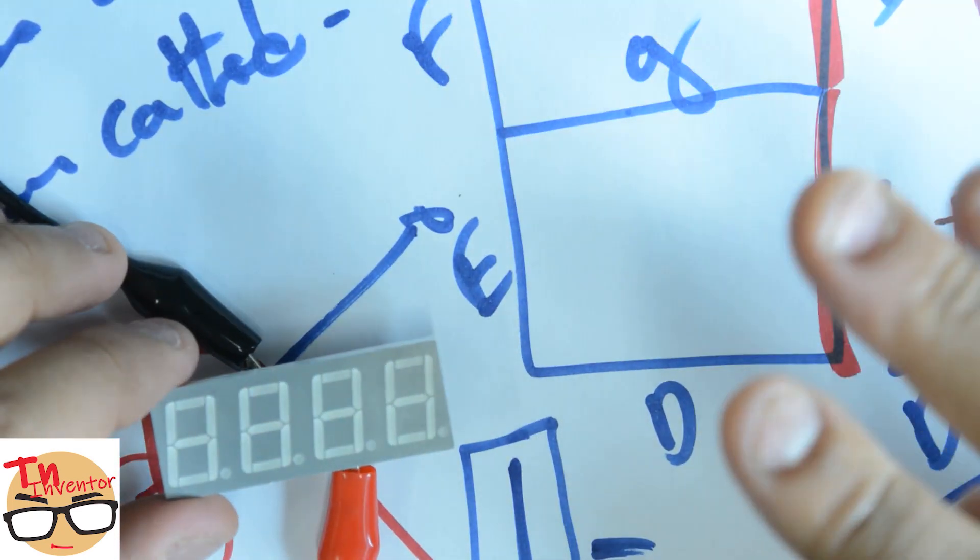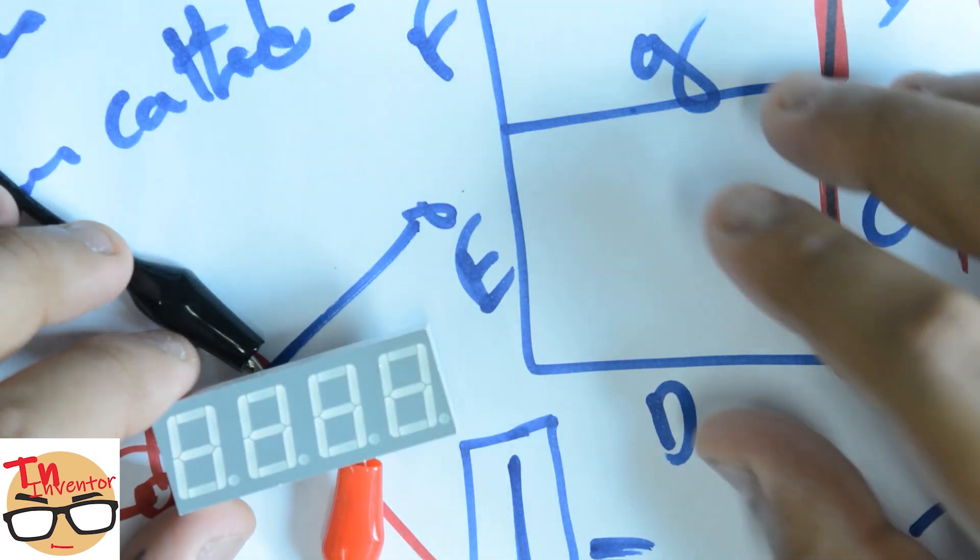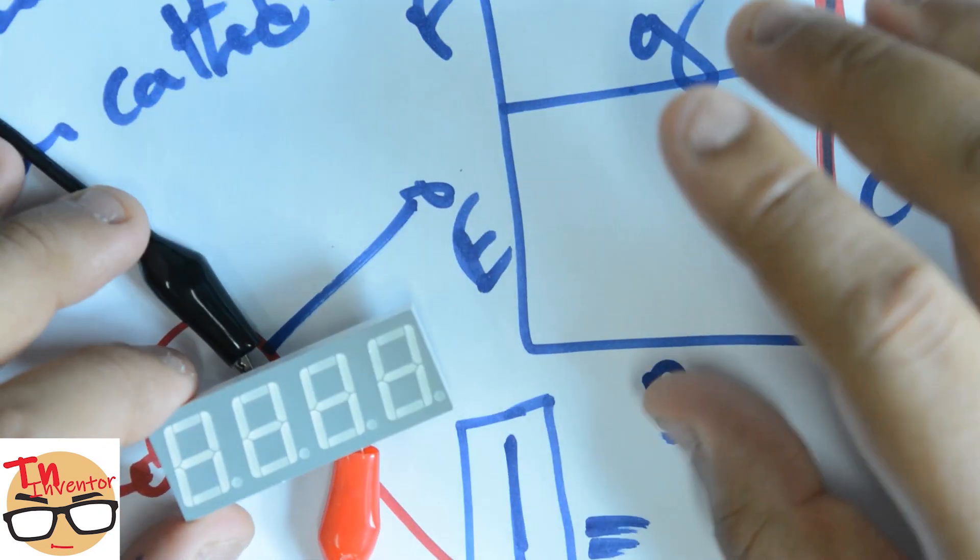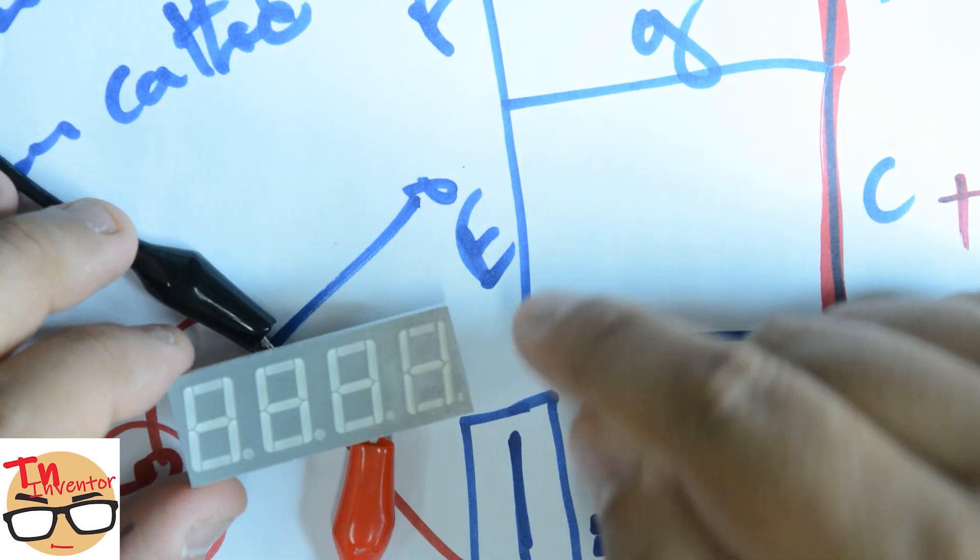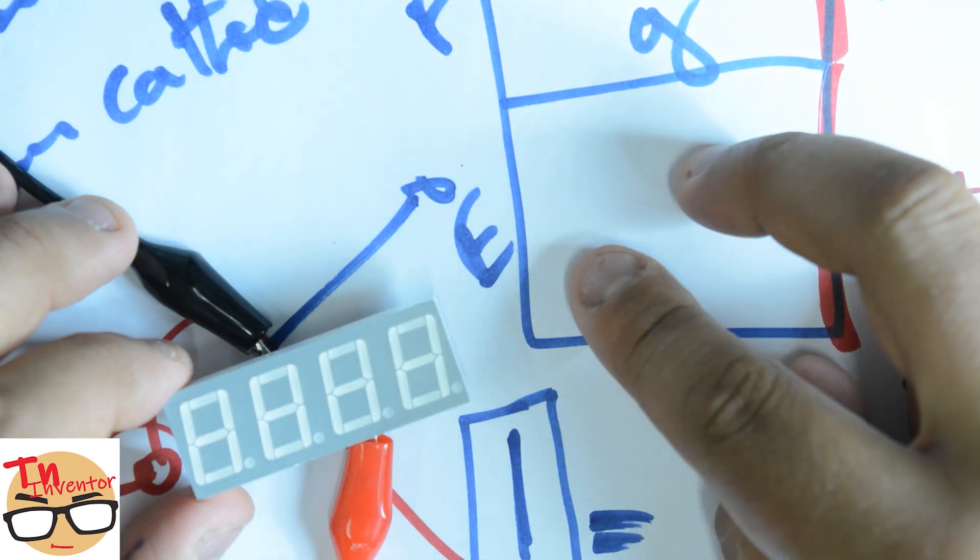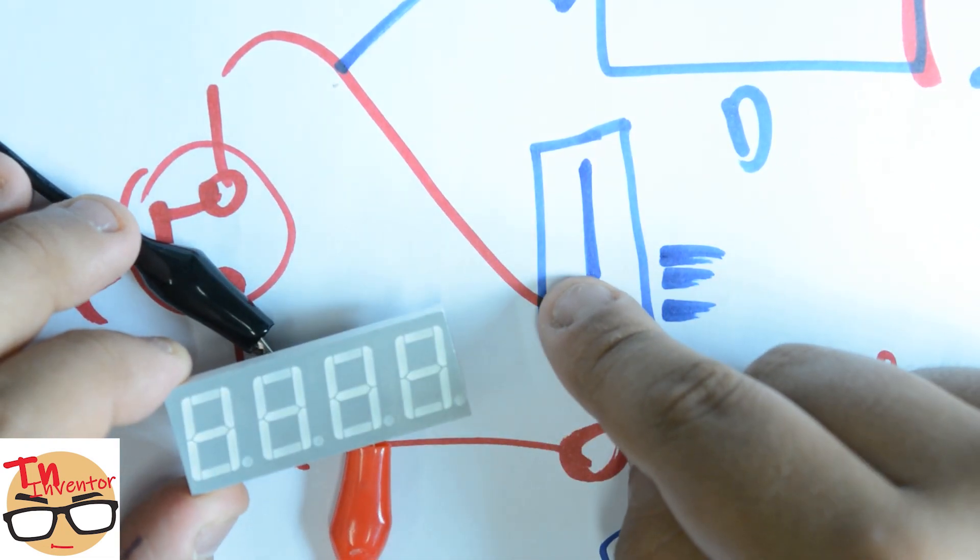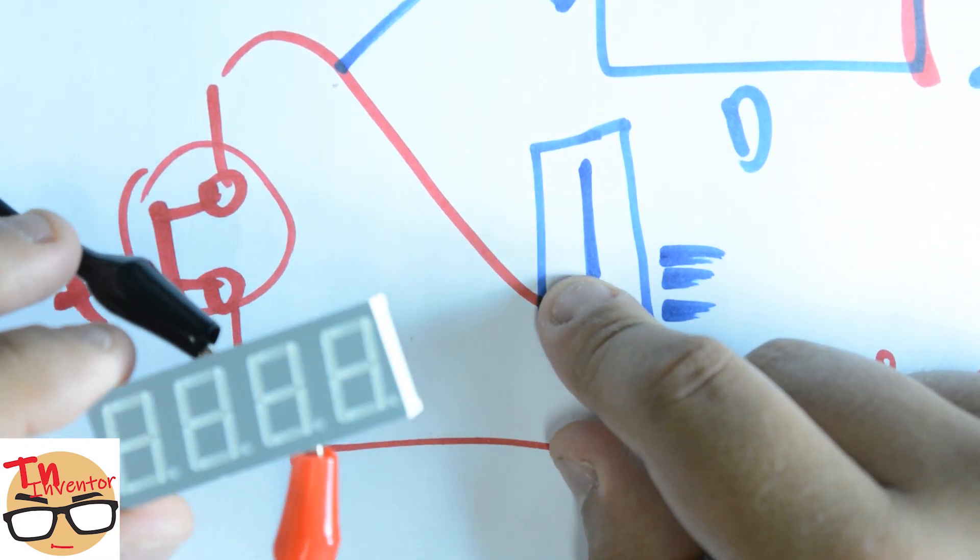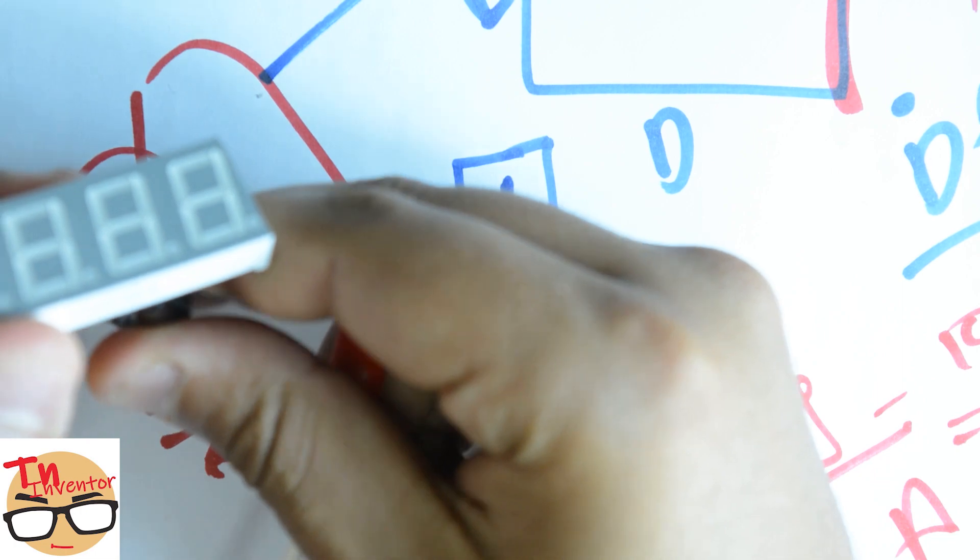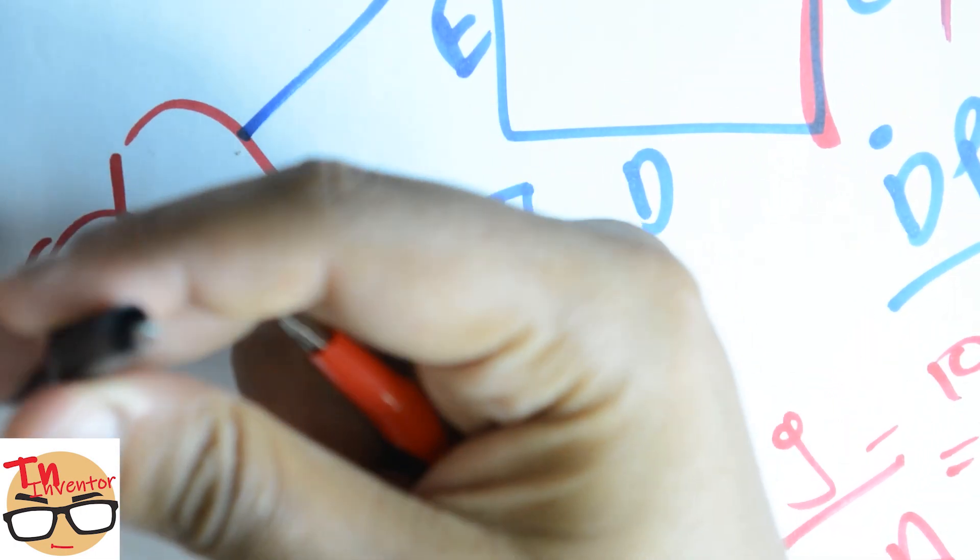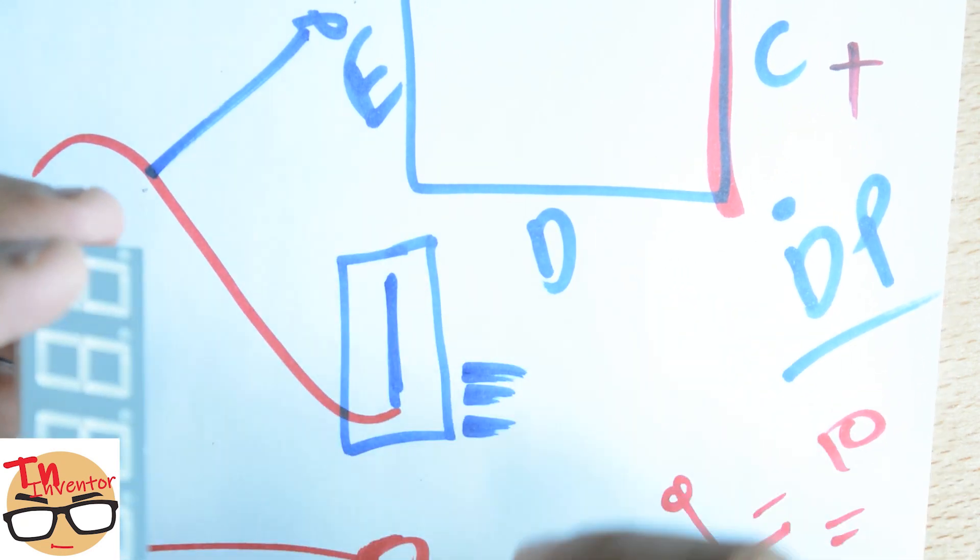The last one didn't light up, which means I have two possible options: either it's burnt, which isn't the case because this is brand new and the first time I tested it, or this is actually a common cathode of one of the other displays. To know if it's true, I'll put it here on ground, come on stick, and then apply voltage to E.